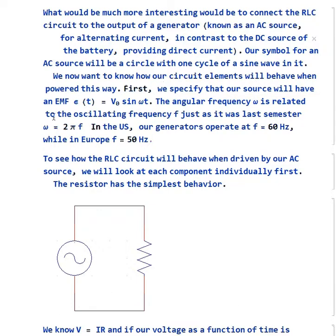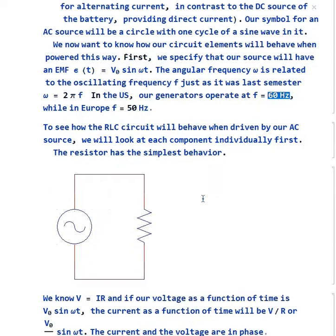So first, we specify that the source has an EMF that changes with time as some amplitude V₀, this is its maximum value, times sine of ωt. This angular frequency ω is related to the regular oscillating frequency f, just like it was last semester, where ω = 2πf. In the United States, f is 60 Hz for us. If you go to Europe, it's 50 Hz.